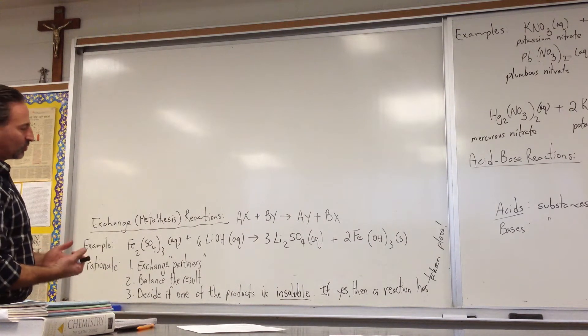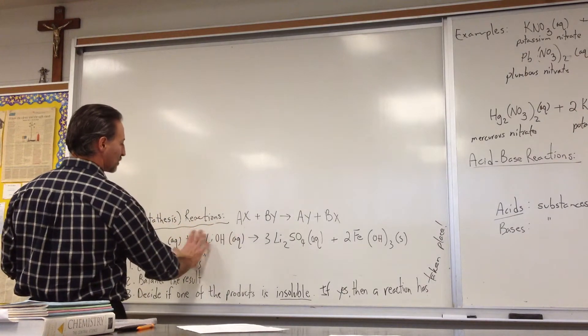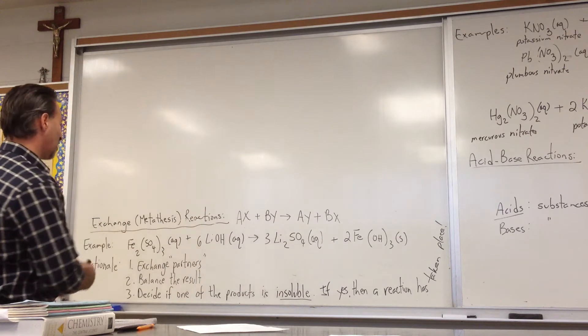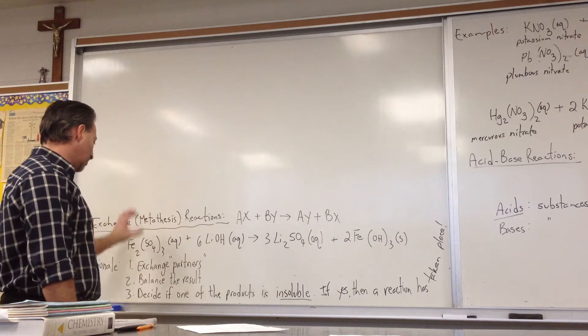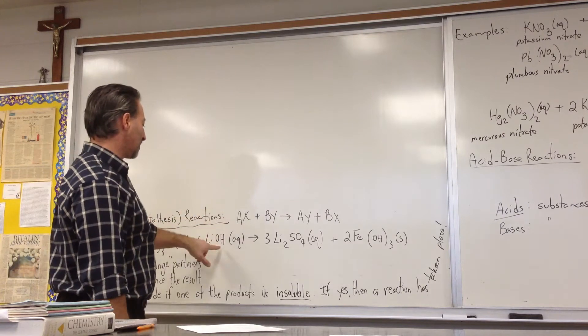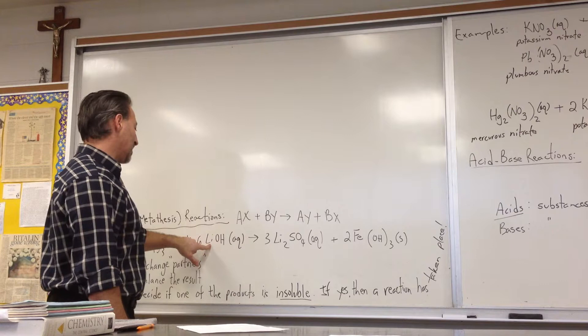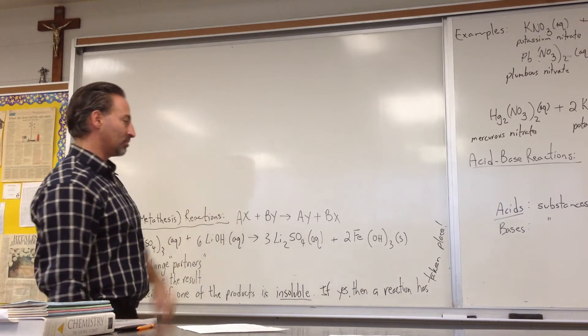When we do the reaction, if we were given only the first half of this reaction, how would we find out what these two products are? Well, we would exchange partners. The metal from this compound, from this molecule, would couple with the anion of the other molecule, and the metal from this molecule would couple with the anion from the first molecule. So that's how you get those two products.